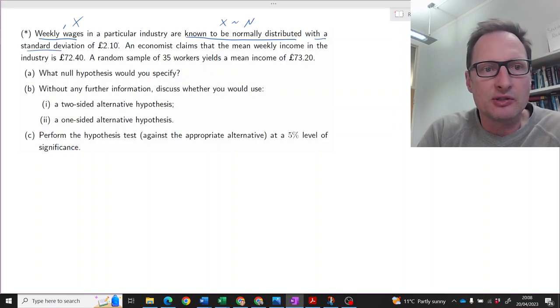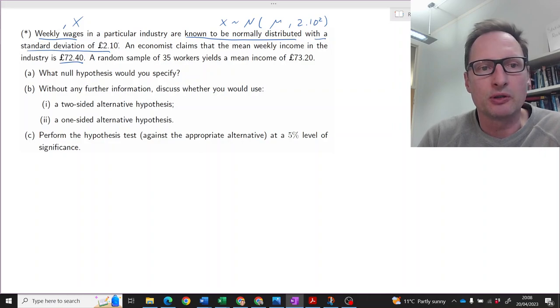Furthermore, we know that this distribution has a standard deviation of 2.1, so we know the variance of that random variable to be 2.1 squared. What we don't know is the population mean, but an economist claims that the mean weekly income in a particular industry is 72.4. We're taking a random sample of 35 workers, so here's our n, our sample size, and that yields a sample mean X-bar of 73.2.